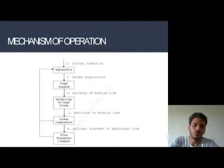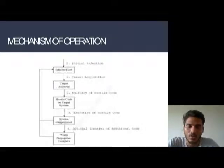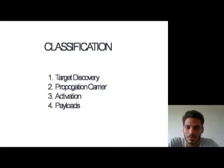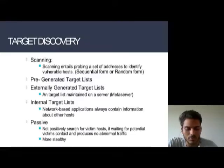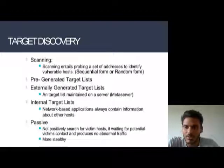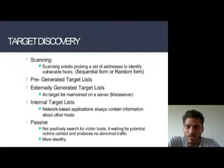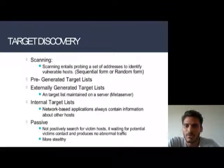Next, classification. We can classify worms into four categories: target discovery, propagation carrier, activation, and payloads. For target discovery, there are generally five methods: scanning, pre-generated target list, externally generated target list, internal target list, and passive scanning. Scanning entails probing a set of addresses to identify a vulnerable host.